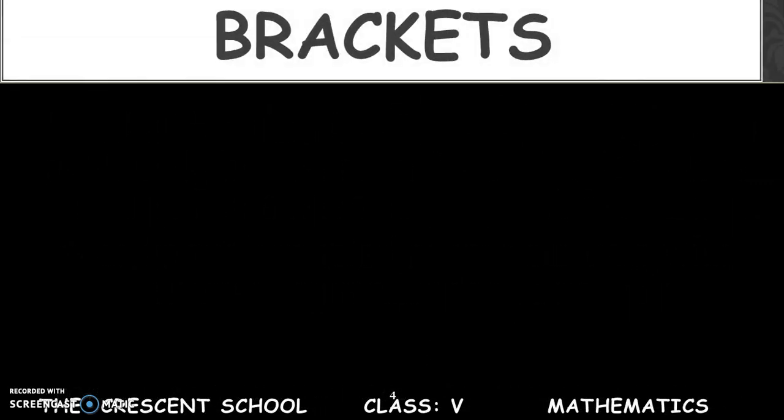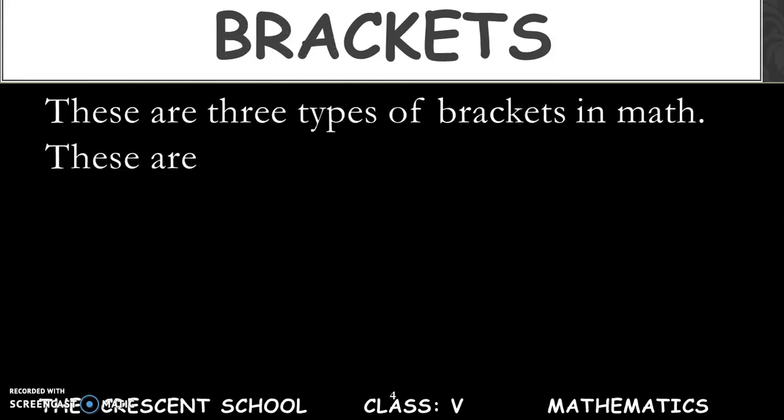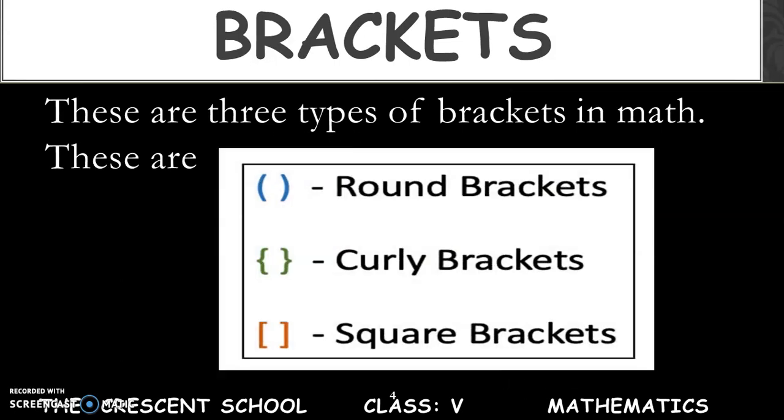What are brackets? Because this word is new for you. There are three different types of brackets in math. These are round brackets, and you can see the shape of the round bracket. Then curly brackets, and this is the shape of the curly bracket. And then square brackets, and you can see the shape of the square brackets. In Class 5 we are going to discuss about round brackets.